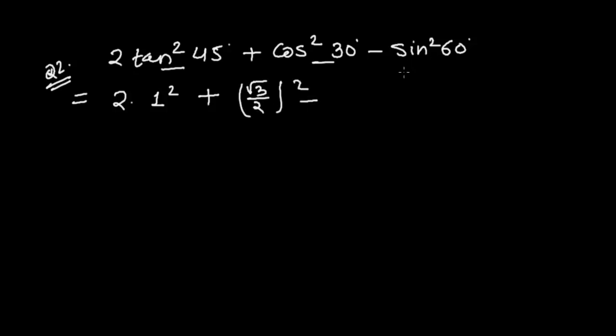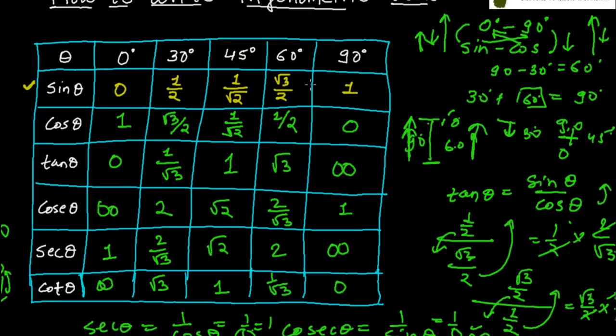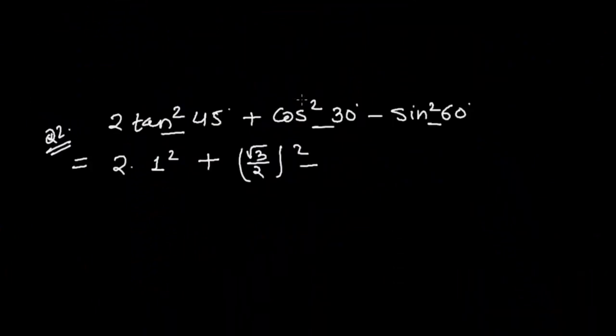Again subtraction sin square 60. So what is the value of sin square 60? Yeah, sin 60 is root 3 upon 2 again. So it is root 3 upon 2. So it is again in the square form.